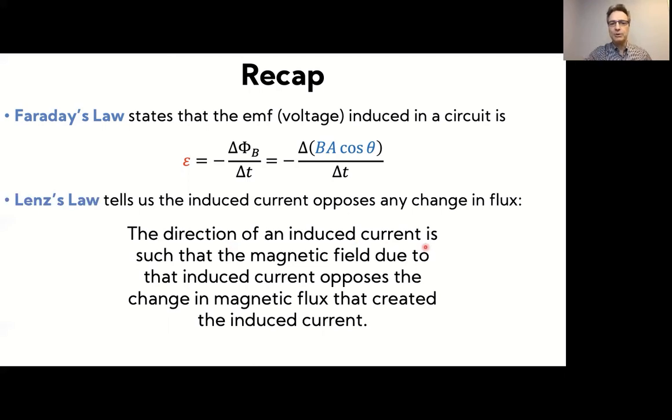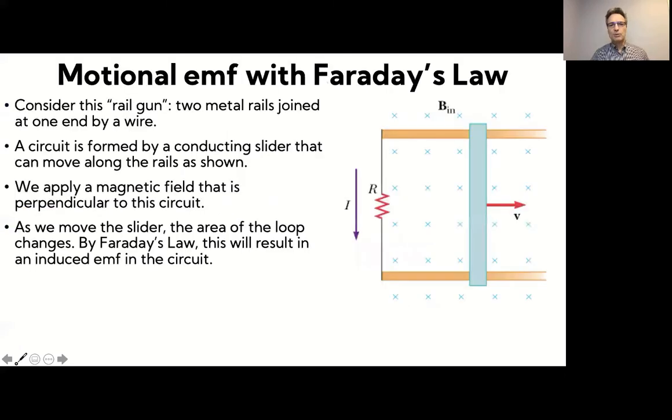And so the direction of the induced current is such that the magnetic field, due to that induced current, opposes the change in magnetic flux that created the induced current. And so now on to motional EMF, let's first look at how to get to this with Faraday's law.